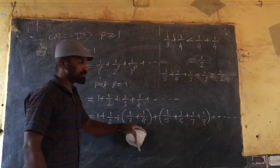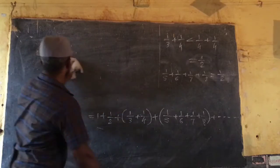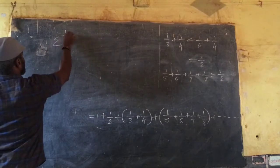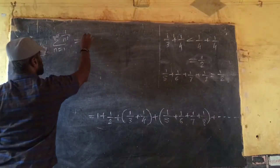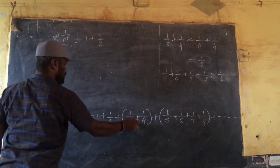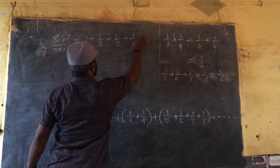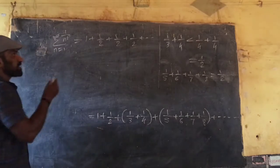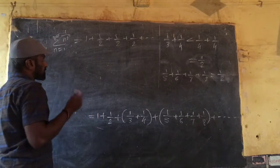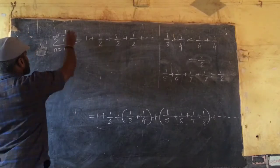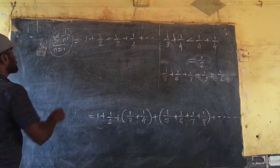Putting these values in this equation, we will get summation of 1 divided by n to the p, n is equal to 1 to infinity. 1 plus 1 by 2, this value is 1 by 2 plus 1 by 2, and so on. By using geometric series and comparison test, we conclude that this series is divergent when p is equal to 1.